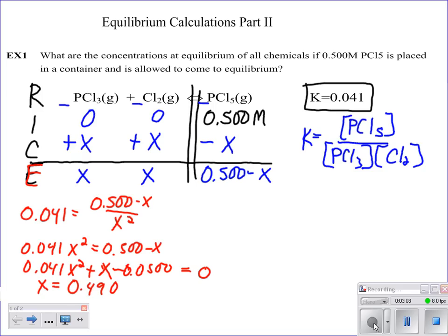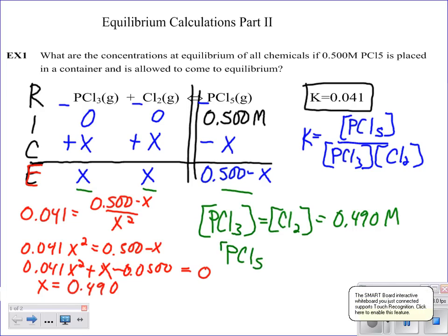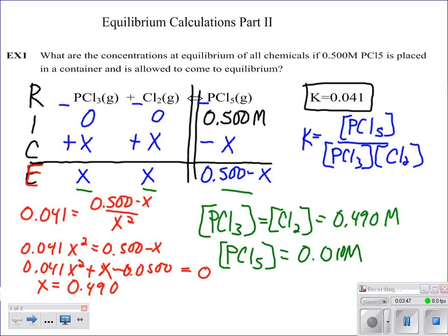So that means that when you go ahead and plug that back in to the values that you have at equilibrium, you plug in your x, you get for your PCl3 concentration and for your Cl2 concentration, they will be the same, which is going to be 0.490 molar. And then your PCl5 concentration is going to be equal to 0.5 minus 0.49. So that's going to equal 0.01 molar. So that's the first one.